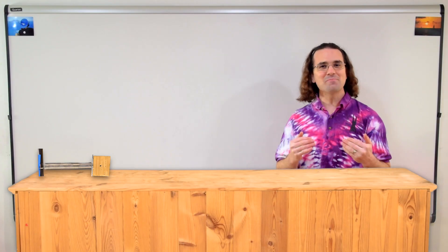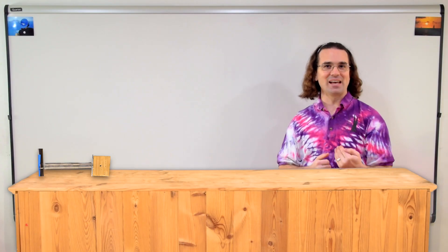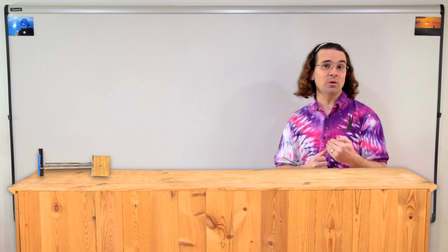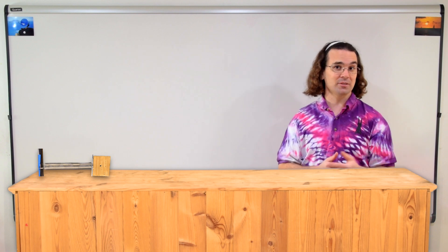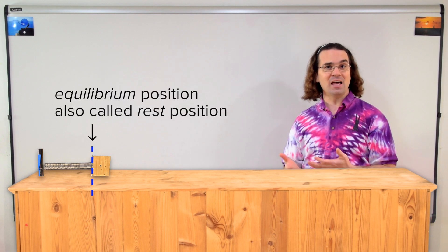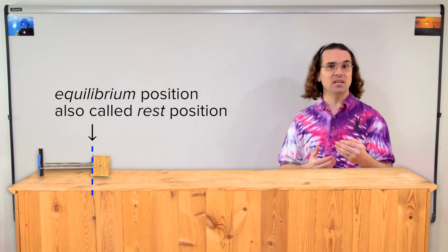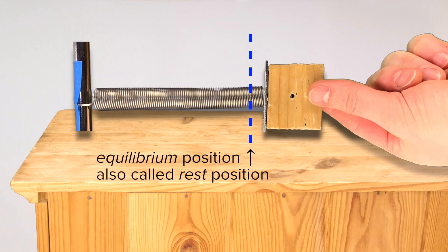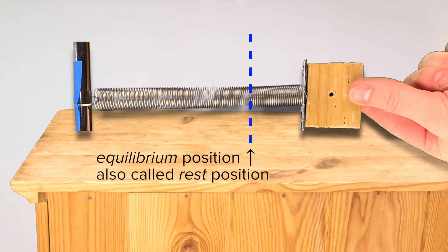When the mass is at rest, the spring will be at the equilibrium or rest position. Let's add a dotted line there to indicate that this is the equilibrium position. Now let's pull the mass to the right and hold it there. We can call this position 1.